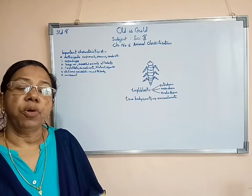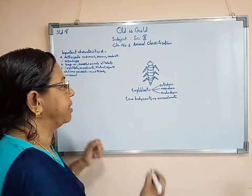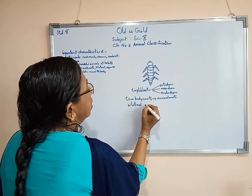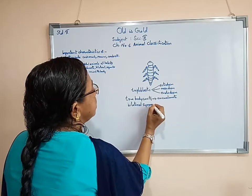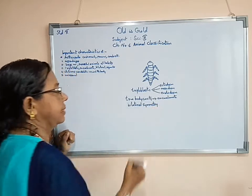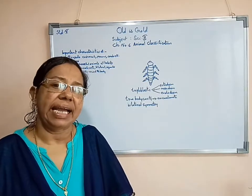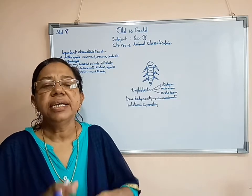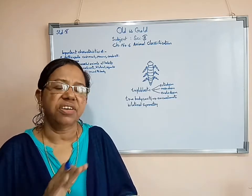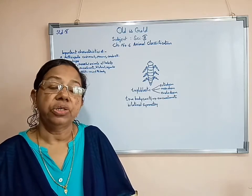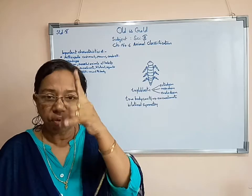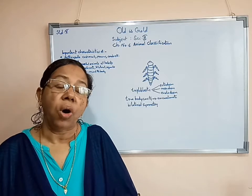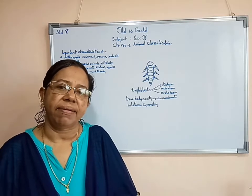Their body has bilateral symmetry. Bilateral symmetry means their body has an imaginary axis. If we cut its body through that imaginary axis, we will get two equal halves; otherwise we won't. So if we cut its body through one axis, we will get two equal halves. Because of that, all Arthropoda are having bilateral symmetry.